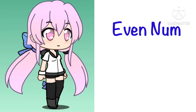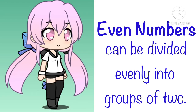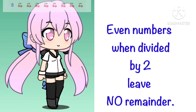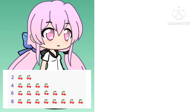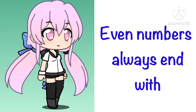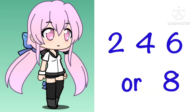Even numbers can be divided evenly into groups of two. Even numbers when divided by two leave no remainder. Even numbers always end with two, four, six, or eight.